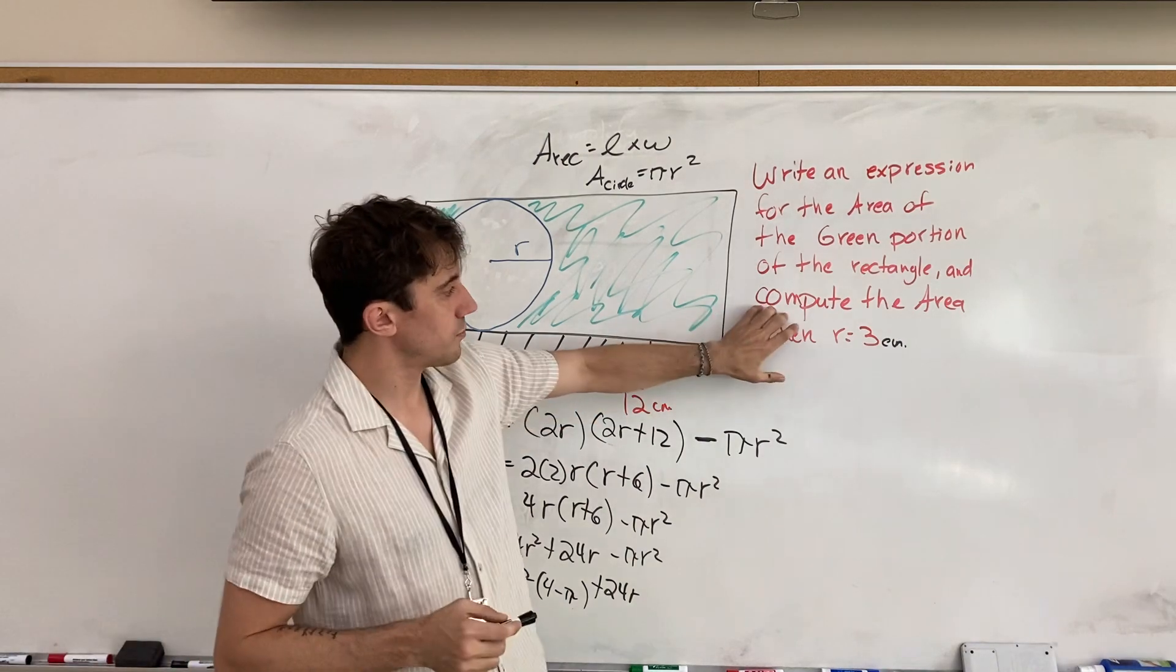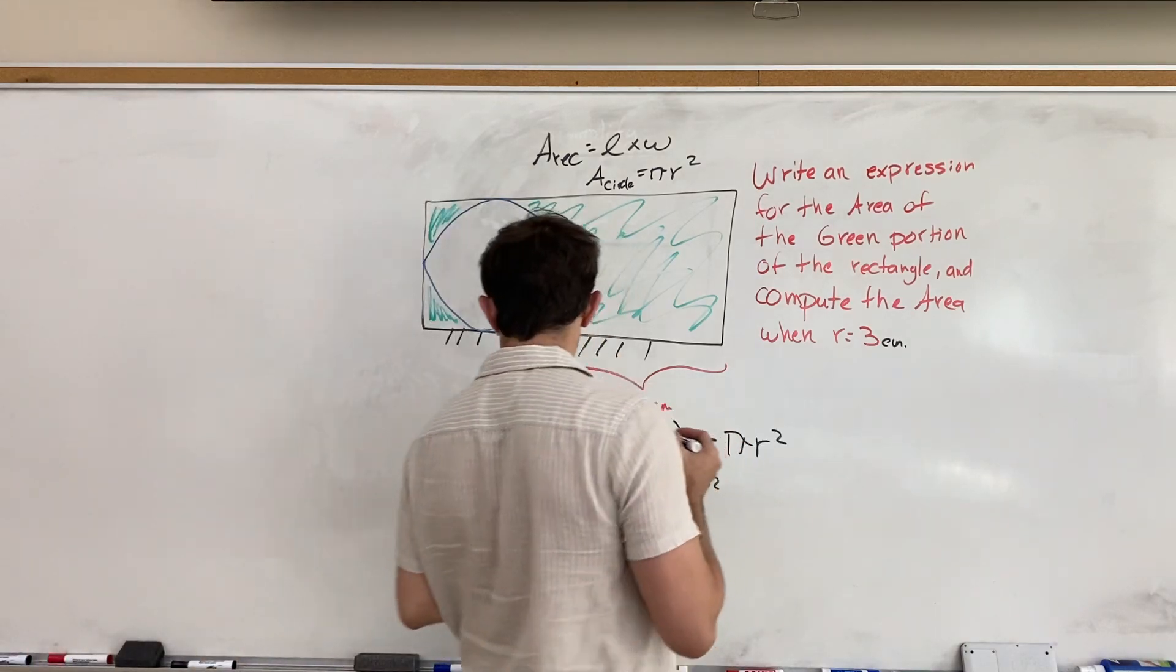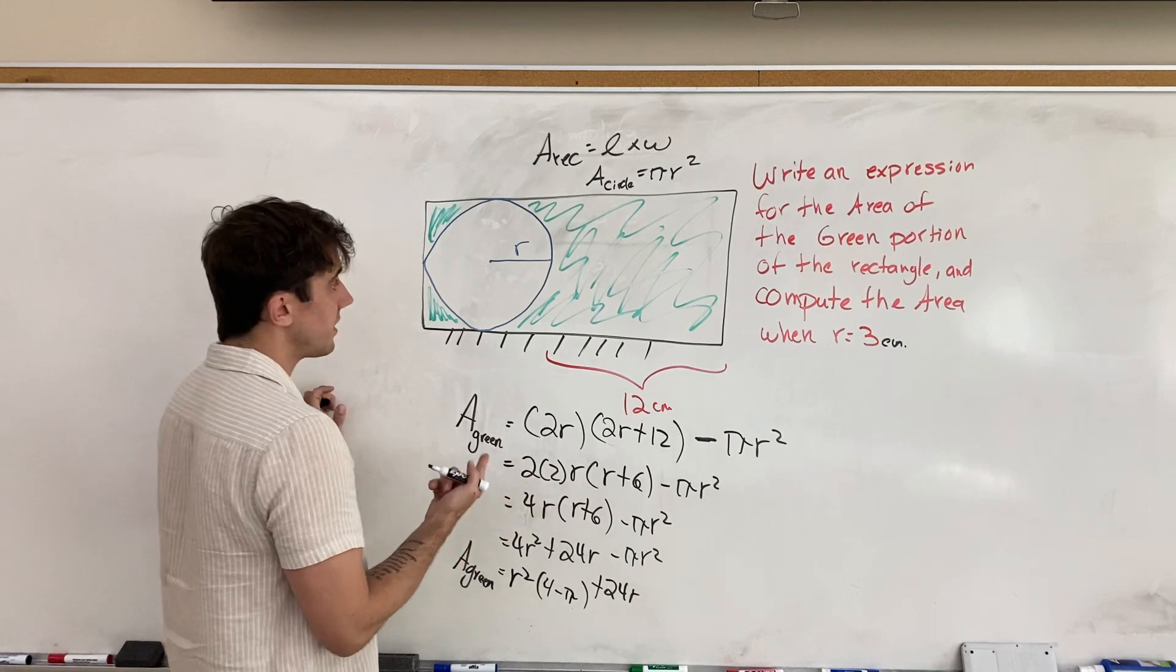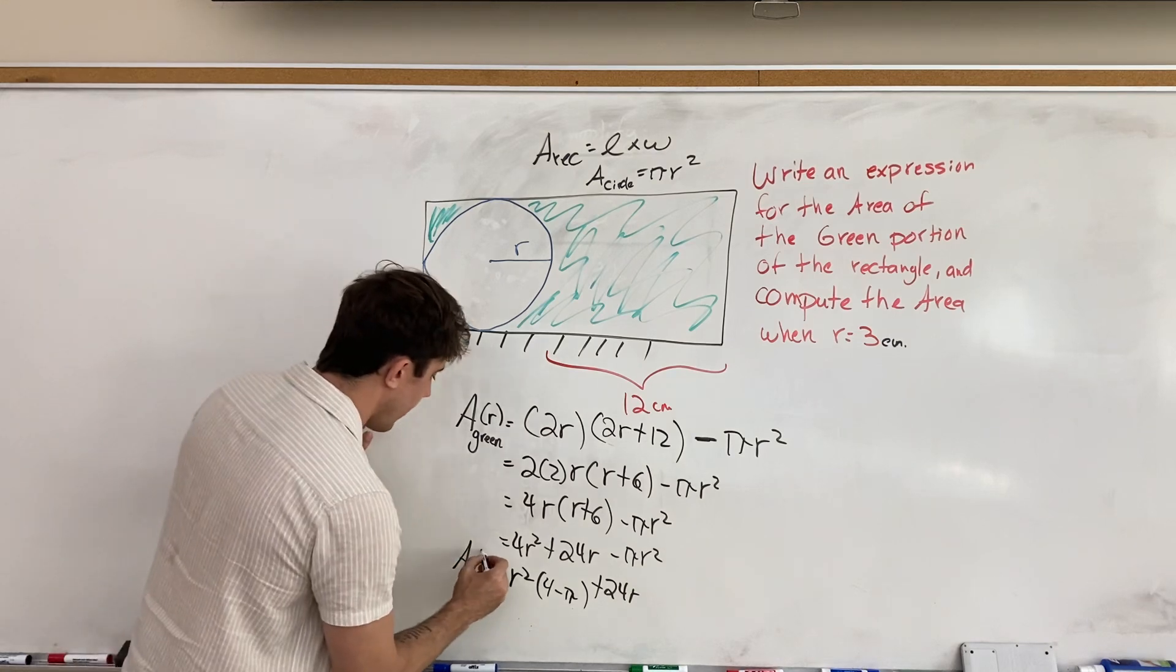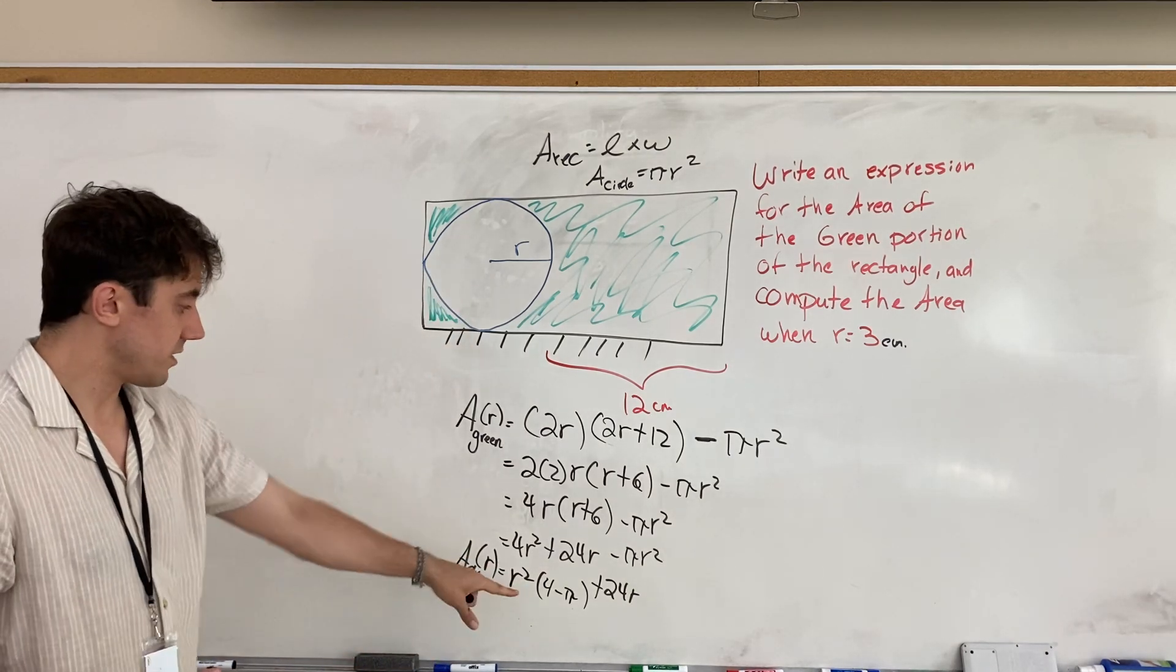And now, we're going to compute the area when that radius is 3 centimeters specifically. So, we could even consider this to be a function. Since the area is a function of the radius, then we can say A of r in function notation, and A of r is equal to all that.